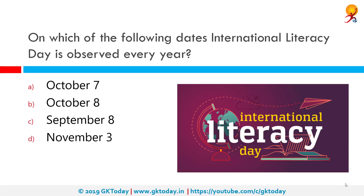On which date is International Literacy Day observed every year? The correct answer is September 8th. The 8th of September was declared International Literacy Day by UNESCO on 26th October 1966 at the 14th session of UNESCO's General Conference, and it was celebrated for the first time in 1967. It aims to highlight the importance of literacy to individuals, communities and societies, with celebrations taking place in several countries.